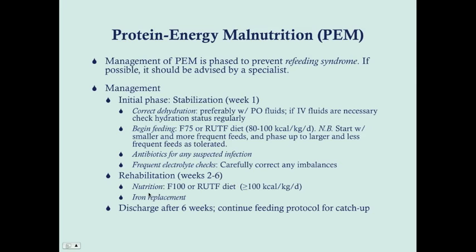From weeks two to six, continue nutrition — you can move to F100 if using the F series, which differs somewhat in composition. You can also continue the ready-to-use diet; a key difference is that the ready-to-use version has a longer shelf life. At this point, give at least 100 kilocalories per kilogram per day. You can also start iron replacement starting at week two of treatment. After six weeks, children can be discharged from an inpatient center and should continue a feeding protocol for catch-up growth.